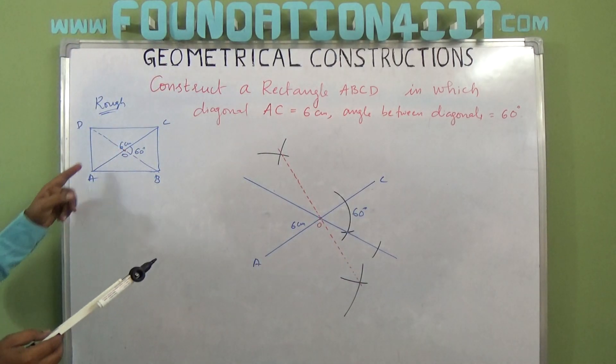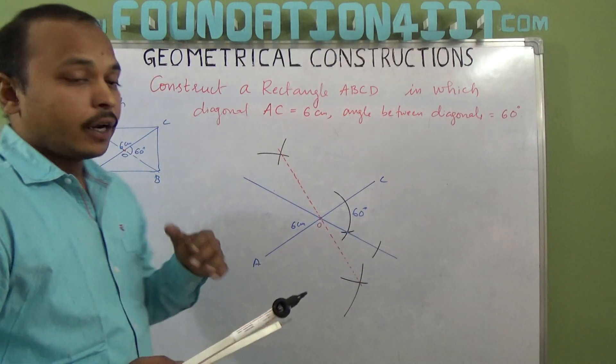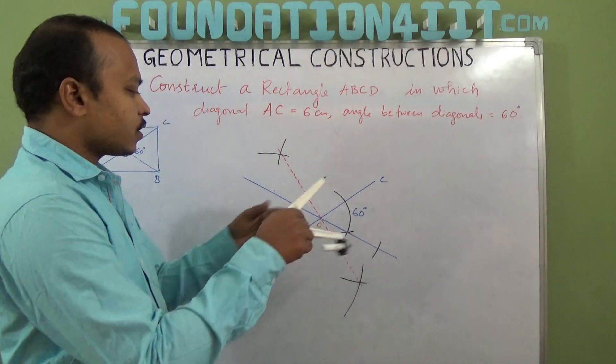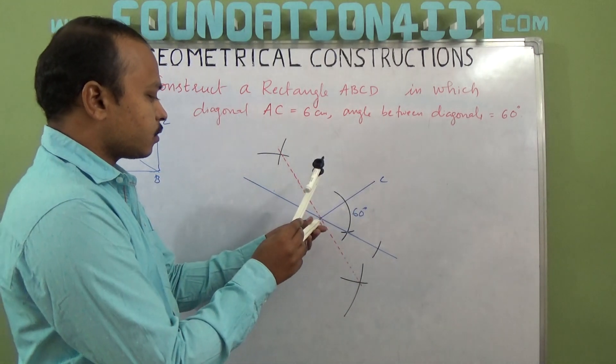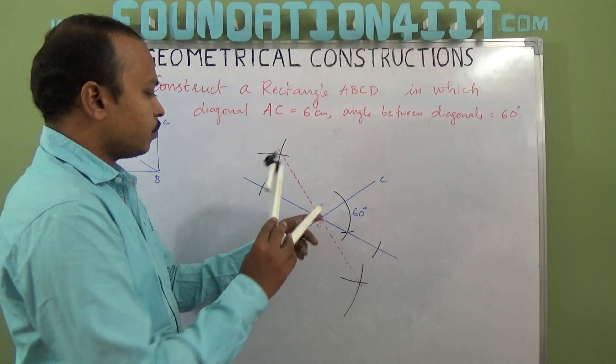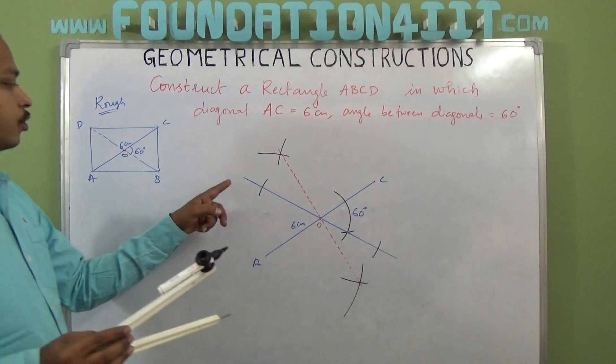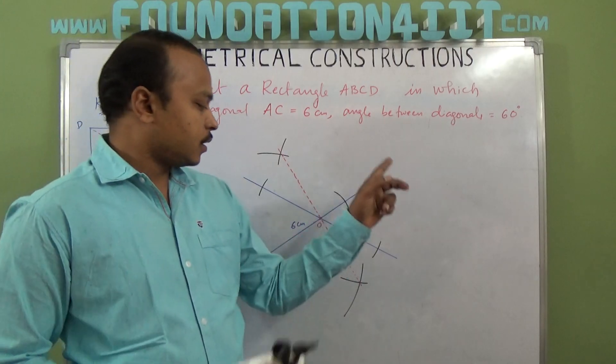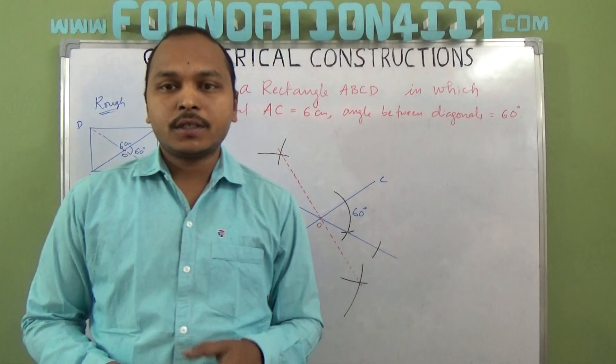O to A and O to D also same, everything is same. O to B and O to D are also same because AC is 6 centimeters, another diagonal must be 6 centimeters, so you can cut this side also.